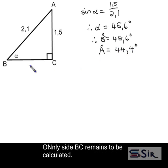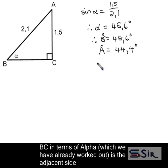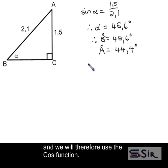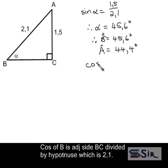Only side BC remains to be calculated. BC, in terms of alpha which we have already worked out, is the adjacent side. And we will therefore use the cos function. Cos of B is the adjacent side, BC, divided by the hypotenuse, which is 2.1.